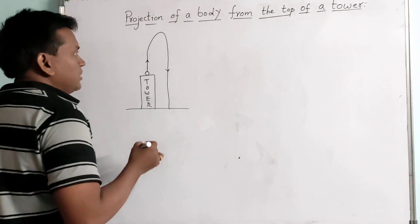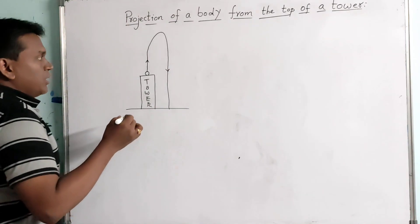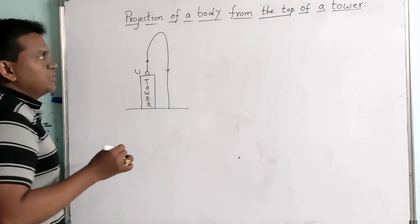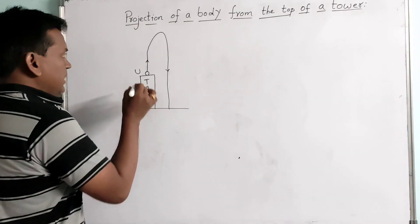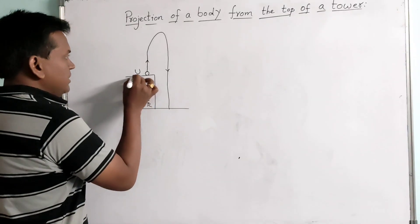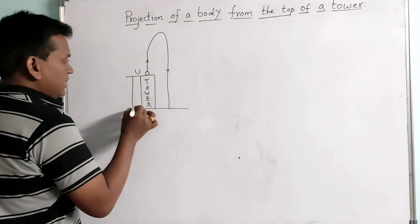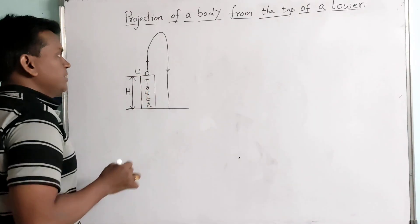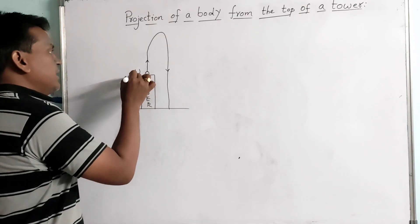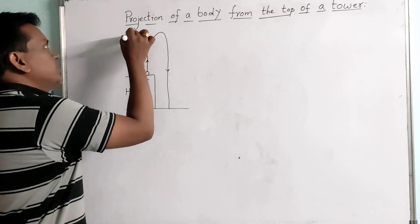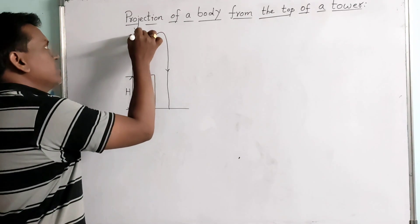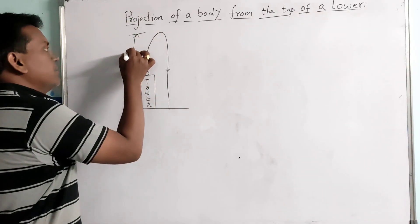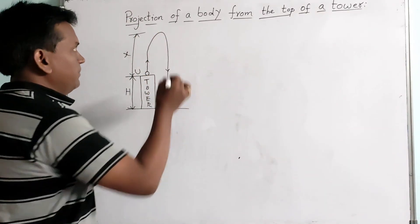This is the path of the body. It is projected with an initial velocity U. This is the height of the tower, H. And from this position to the maximum height, this is the displacement made by the body, that is X.